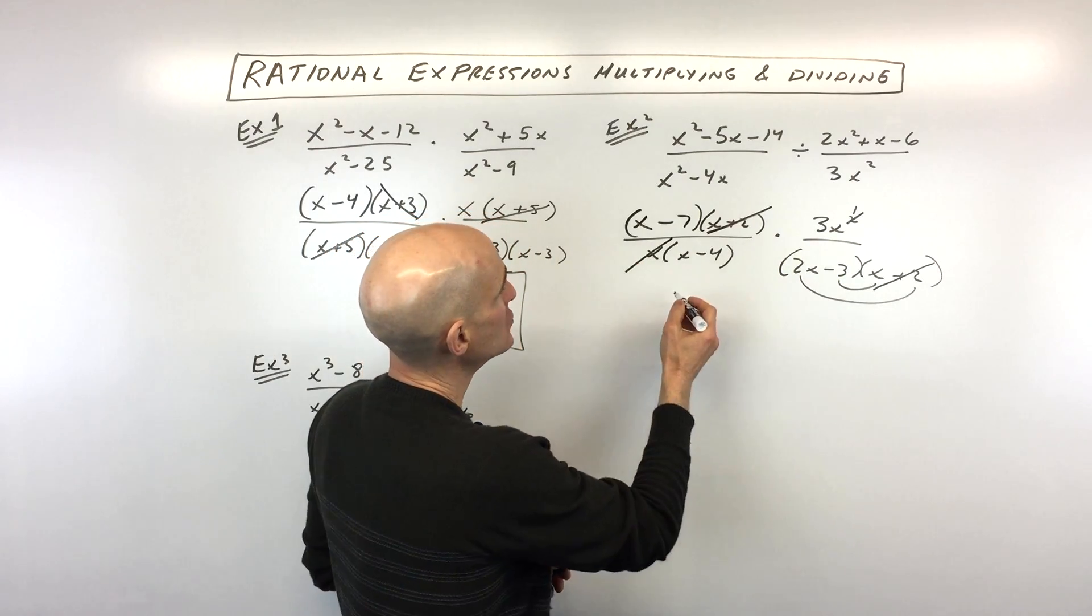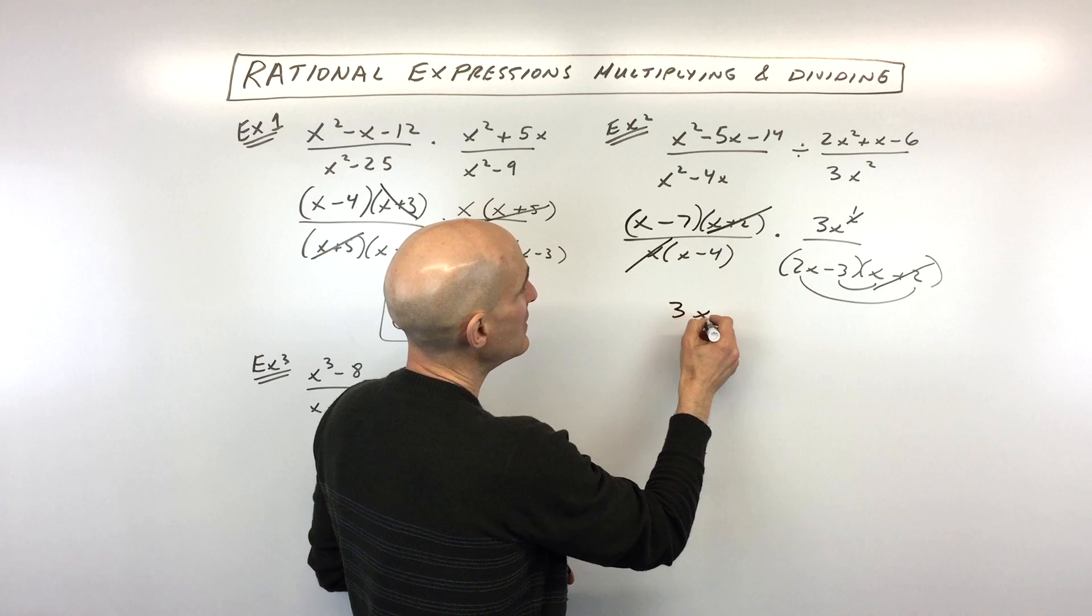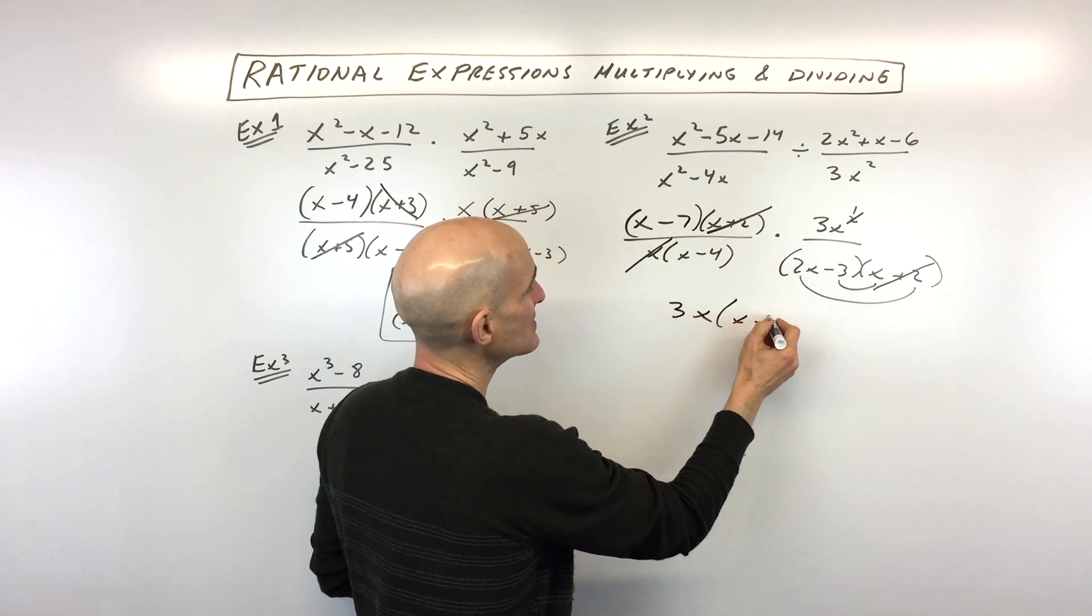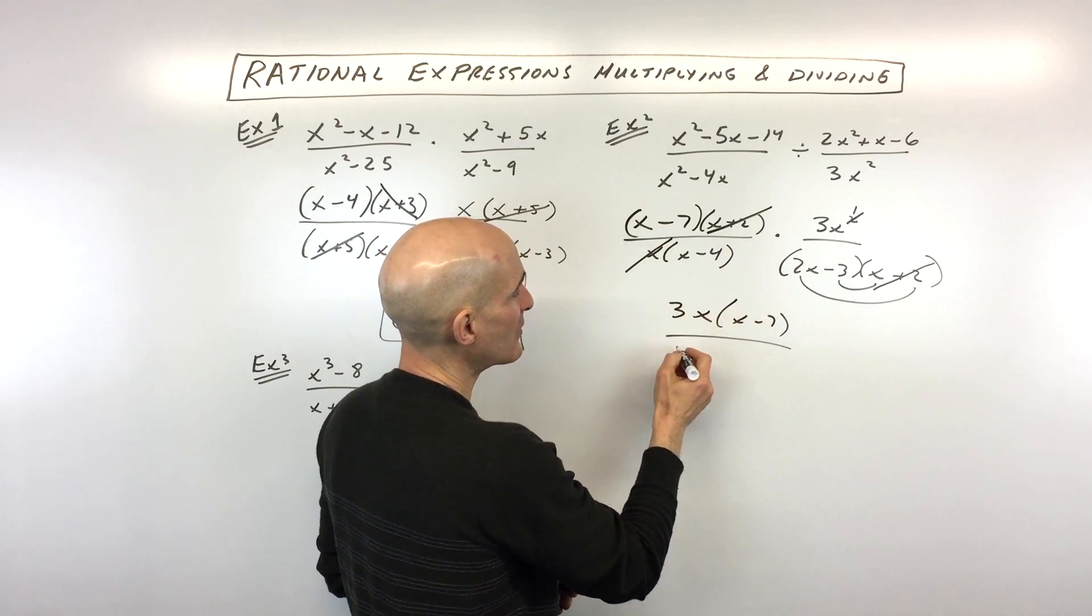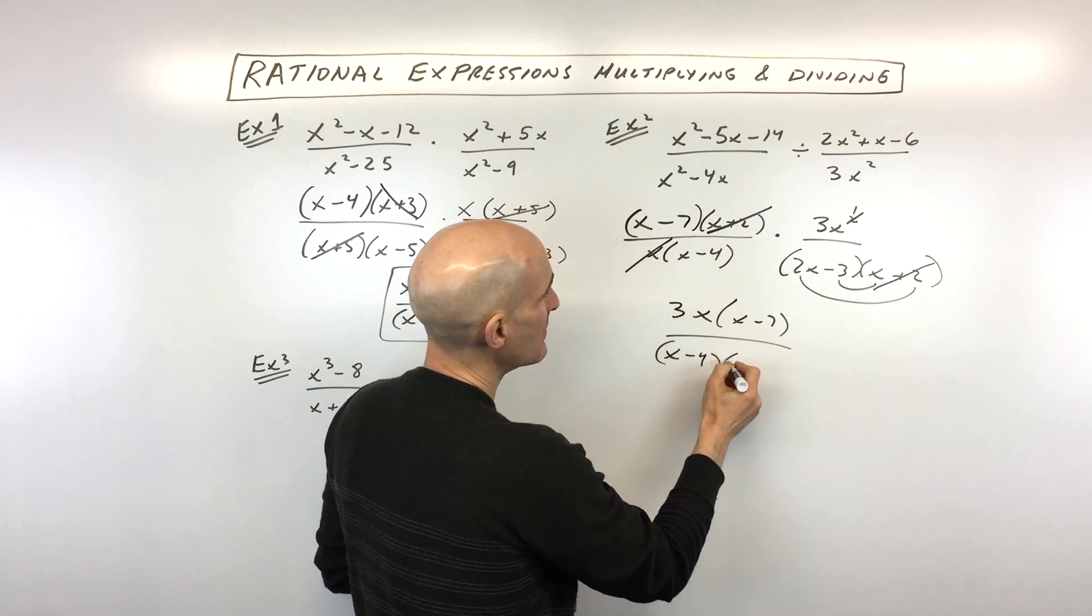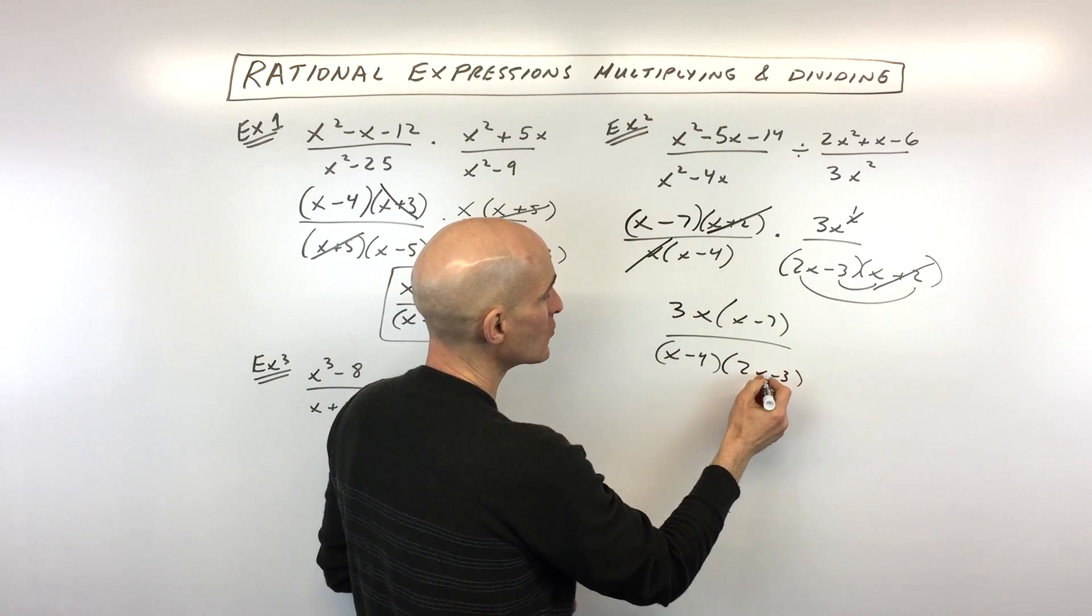So now we're going to write this out. We've got 3x times x minus 7. And again, I'm just leaving it in factored form. And the denominator, I'm just multiplying across x minus 4 times 2x minus 3.